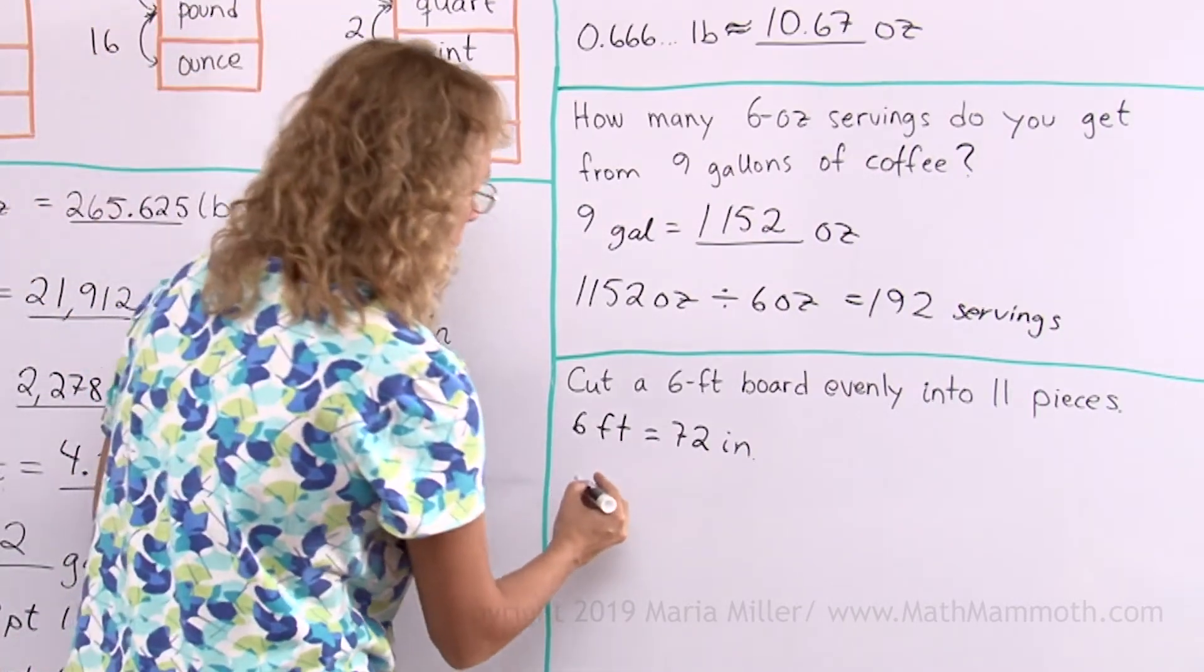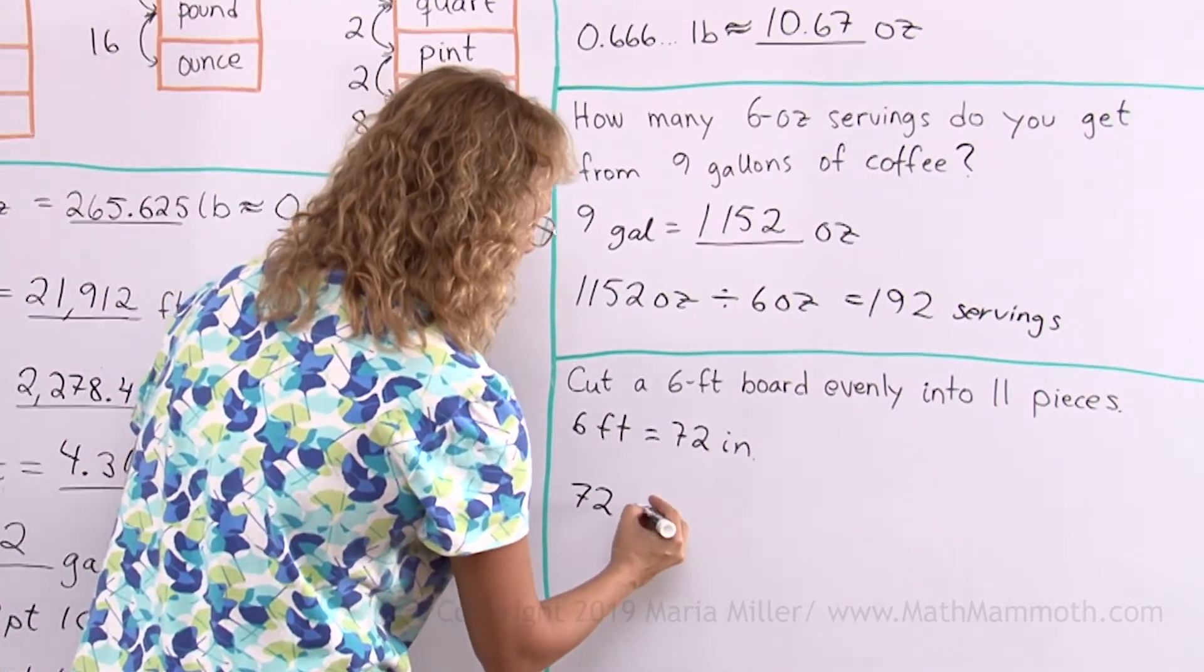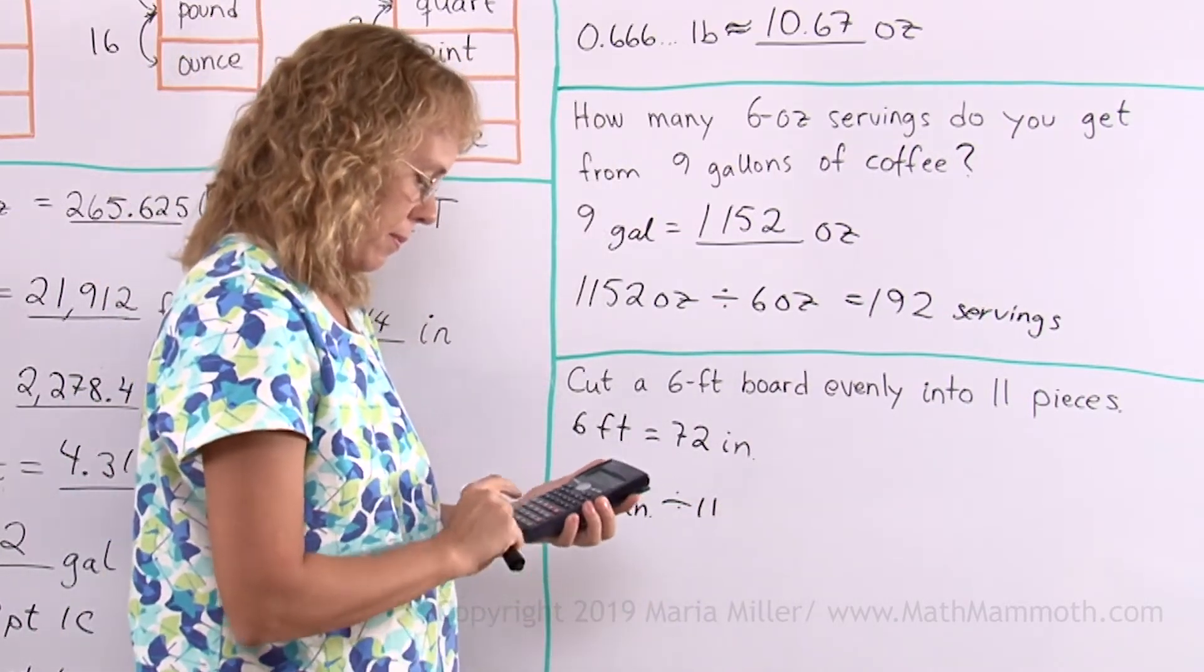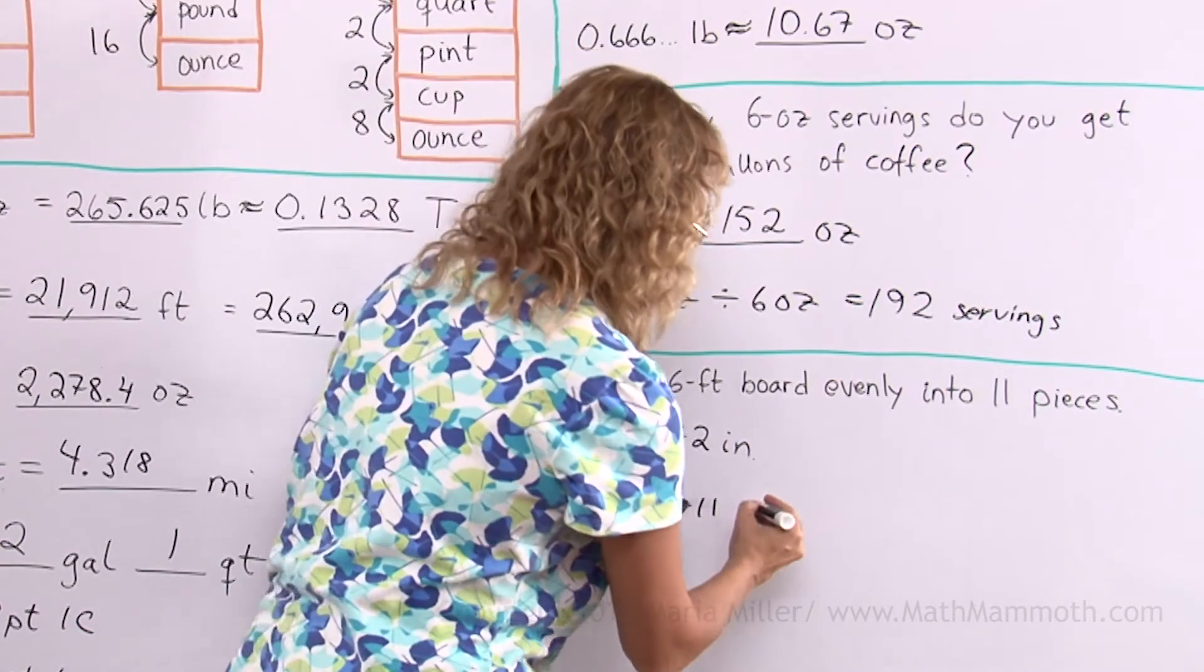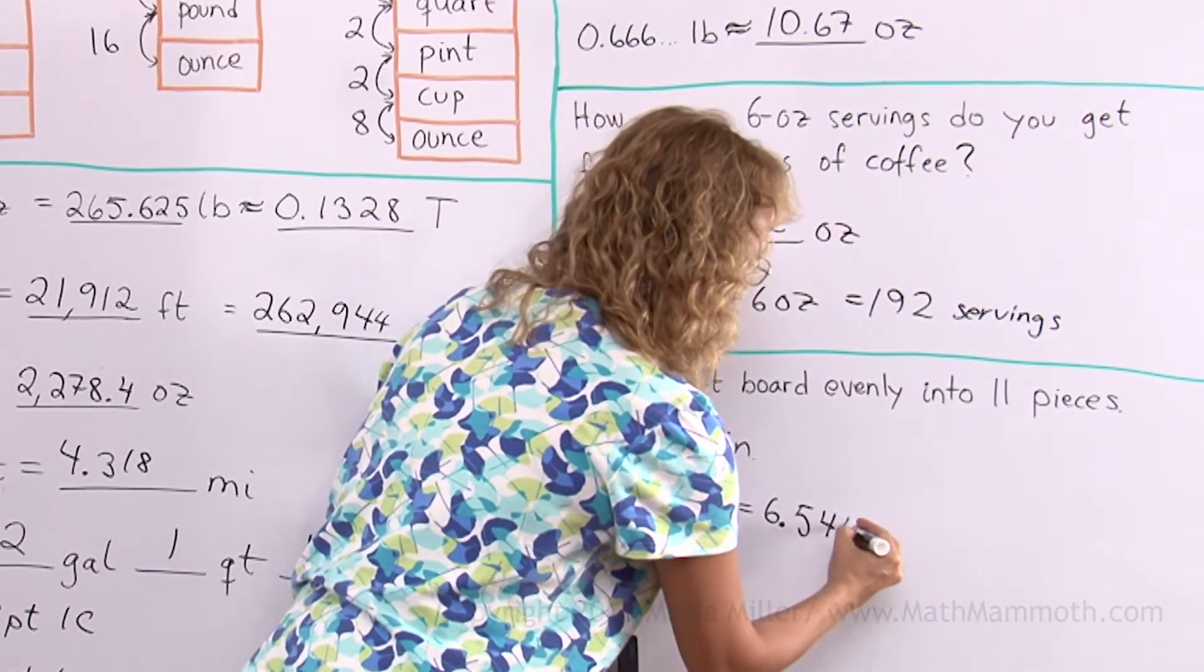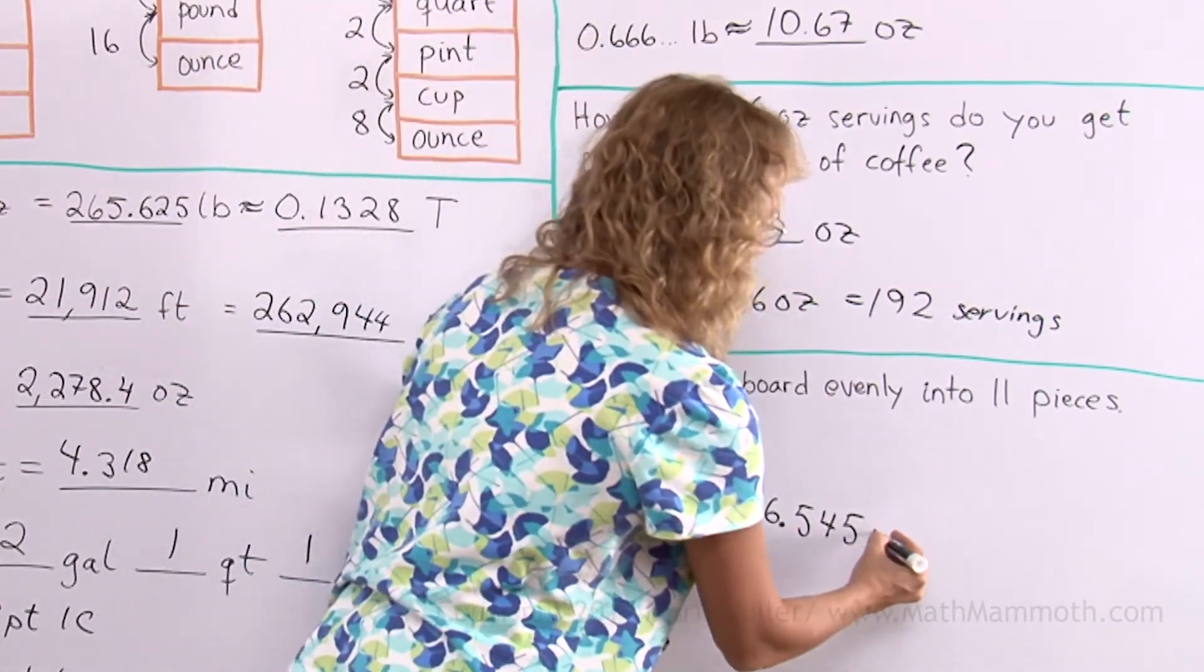Right? 72 inches divided by 11. And we get it is 6.545 inches.